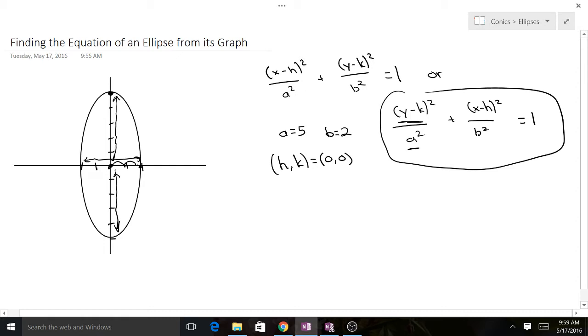So now we can really just plug and chug and see what we get. We're going to get (y - 0)² over 5² which is 25, then we're going to add (x - 0)² over b² which is just 2² and 4 equals 1.